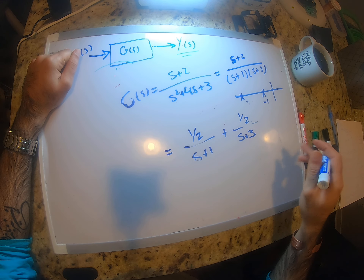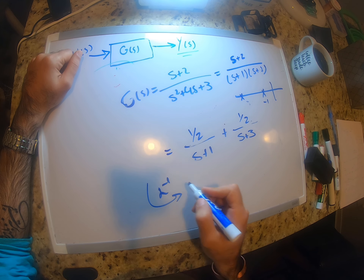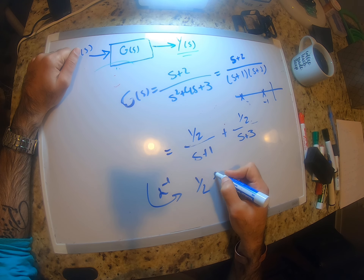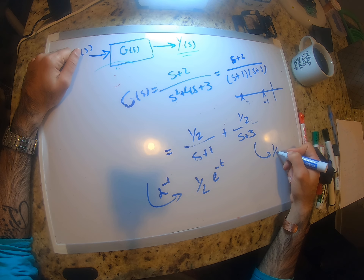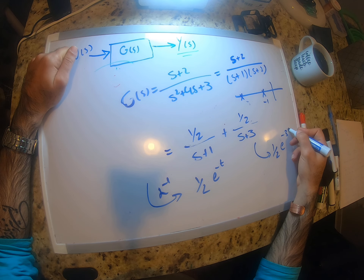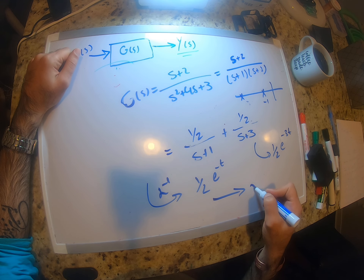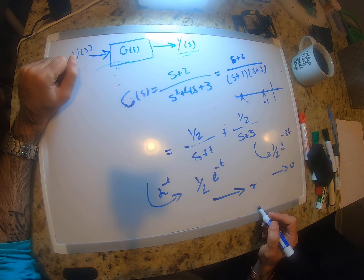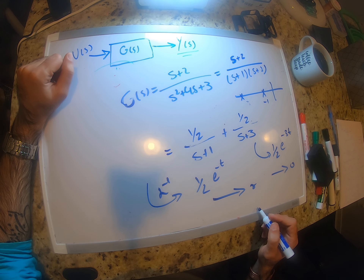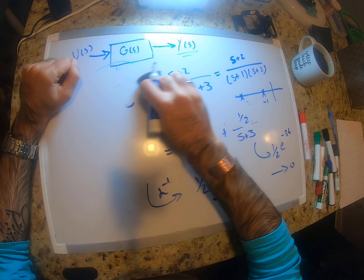Going to the time domain, the result is (1/2)e^(−t) plus (1/2)e^(−3t). Both terms go to zero as t goes to infinity, which confirms that the system is stable.